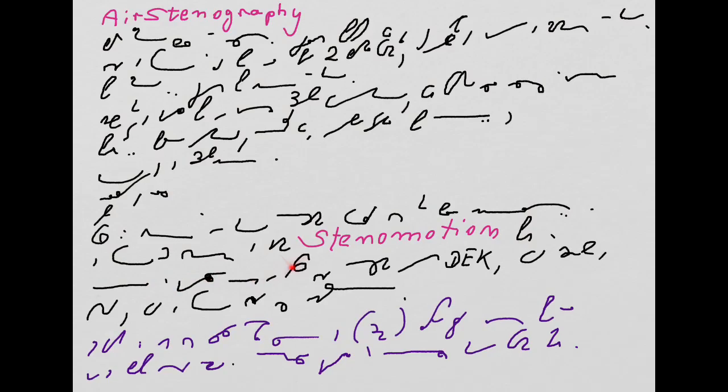Stenomotion is based on a classical cursive shorthand system like D-E-K, which has an adaption to English, which the poster currently uses in this steno video.